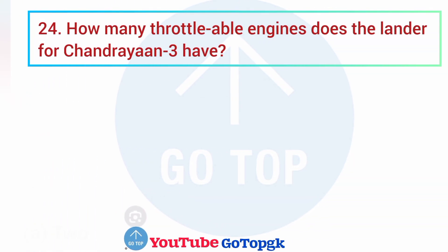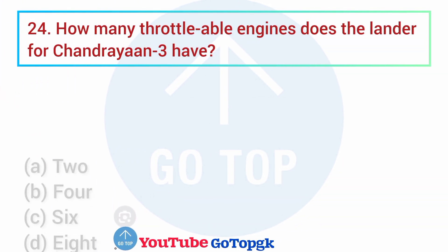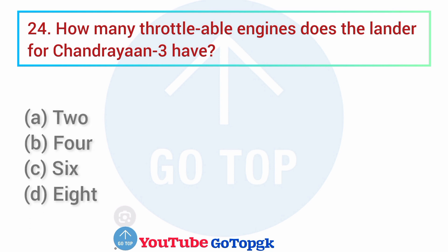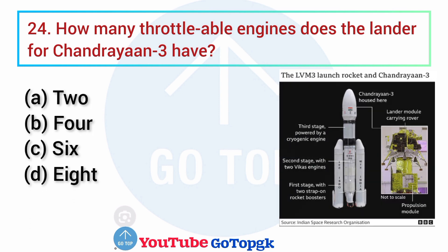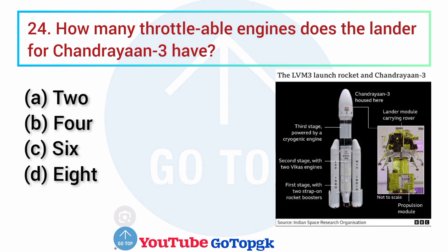Question No. 24. How many throttleable engines does the lander for Chandrayaan-3 have? Options: A. 2, B. 4, C. 6, D. 8. Your correct answer is option B: 4 throttleable engines.